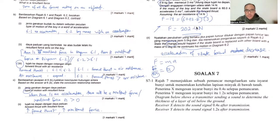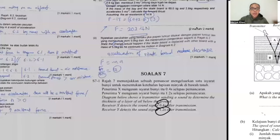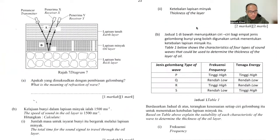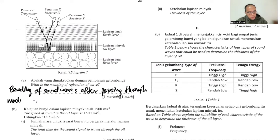Question 7: you have a transmitter sending a sound. Receiver X detects a sound at 0.4 seconds and detector Y detects a sound at 1.2 seconds, so there is a difference. What is the meaning of refraction of waves? The key word for refraction of waves is the bending of sound waves, or the changing of direction of sound waves after passing through mediums with different densities.